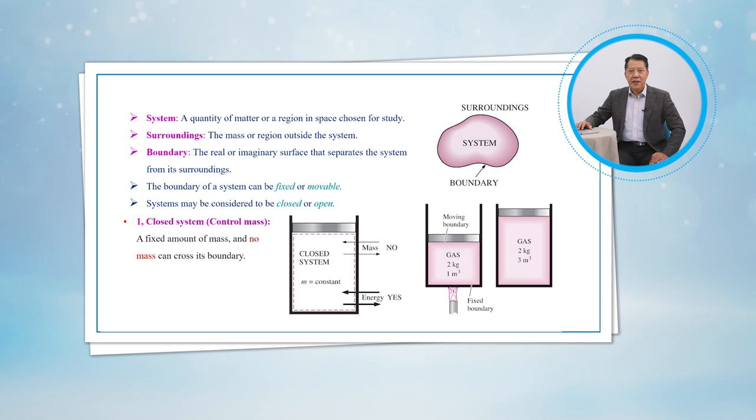If, as a special case, even energy is not allowed to cross the boundary, then that system is called an isolated system.